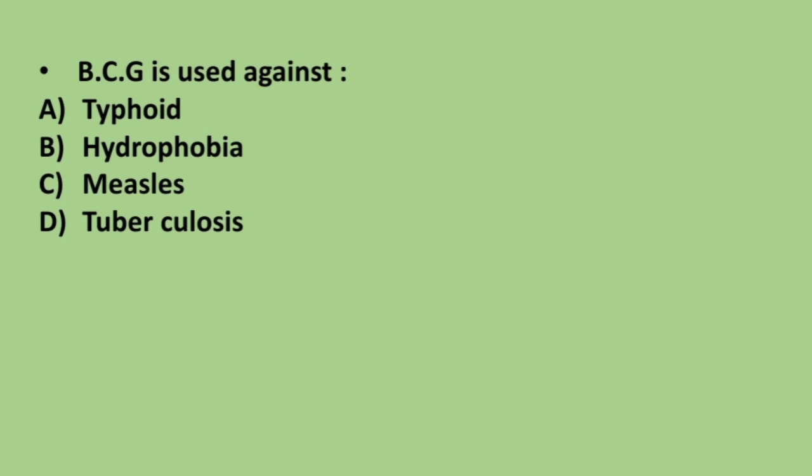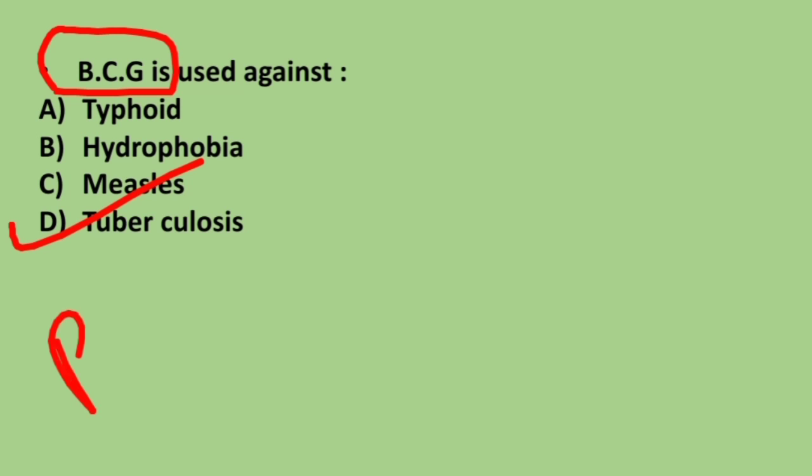Next question: BCG is used against — typhoid, hydrophobia, measles, or tuberculosis? The correct answer is option D, tuberculosis. The full form of BCG is Bacillus Calmette-Guérin.